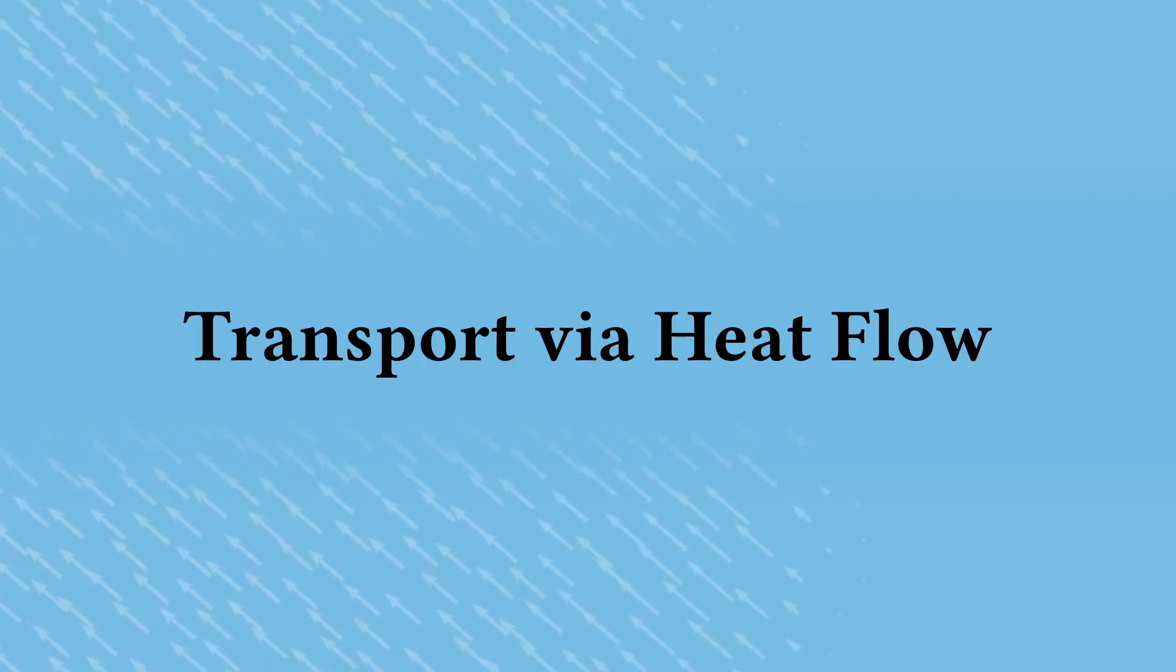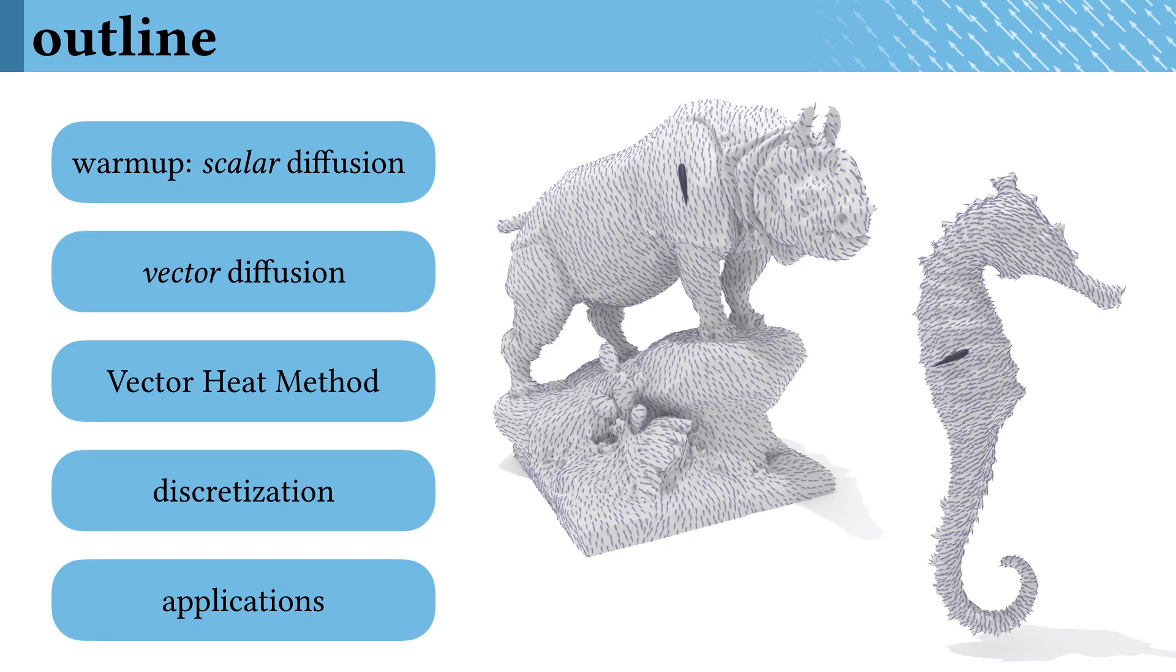So how do we put this observation to work to transport vectors around a surface and build an algorithm? We'll start by talking about a simpler scalar diffusion problem, then introduce the full vector diffusion problem and use it to build our vector heat method. Then we'll talk about different ways to discretize the algorithm as well as some applications.